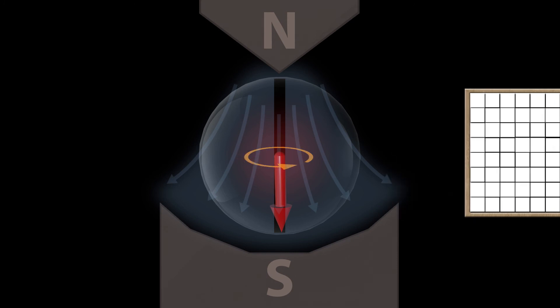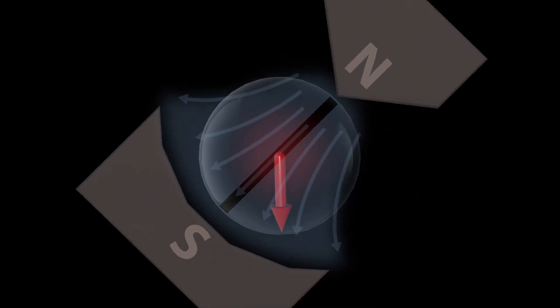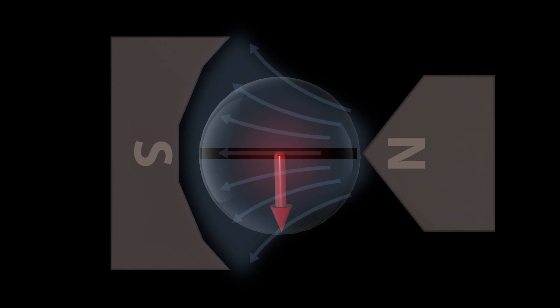Now, we rotate the direction of the inhomogeneous magnetic field by 90 degrees. Then, the same initial state is no longer an eigenstate.